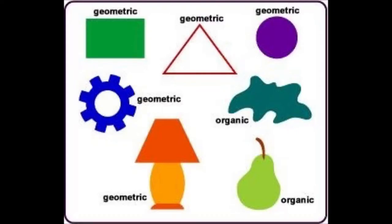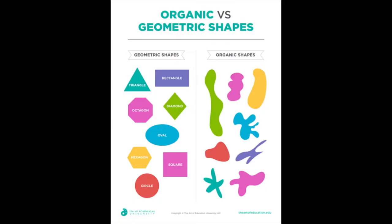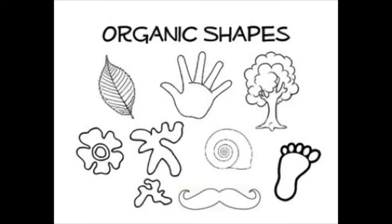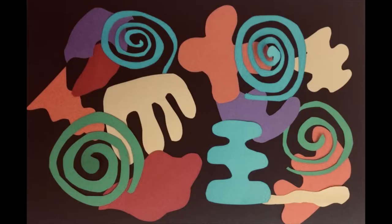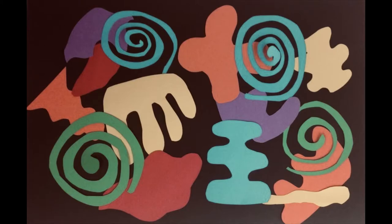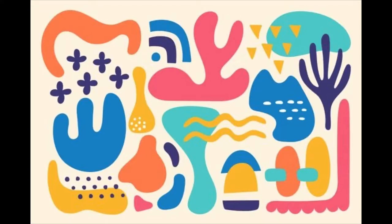A shape is a closed space made when a line connects to itself. The organic shapes are often curvilinear in appearance and are very similar to those that we find in nature, such as plants, animals, and rocks.